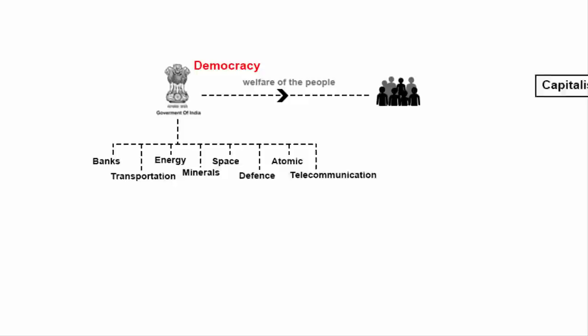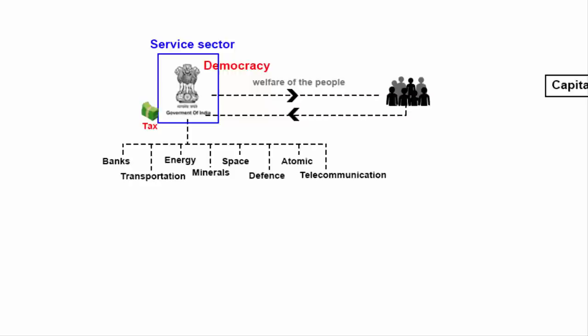Always remember this point: at the end of the day, government is a service sector. They rely on taxes and use that money to run services like welfare schemes and investment for the nation. The government has very little way of generating profit. In a government setup, the cost of running any service has to be lesser than the revenue. That is why in every government department you will find only 40-50% of manpower, which is also the reason for delays in delivery of so many government services.